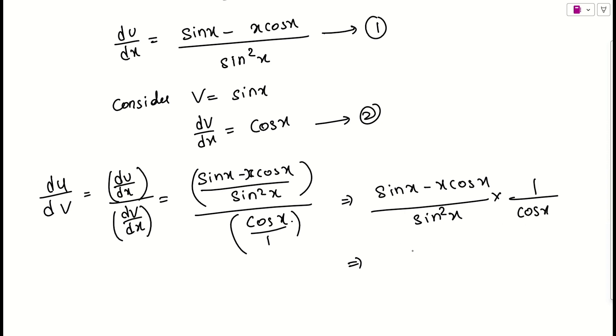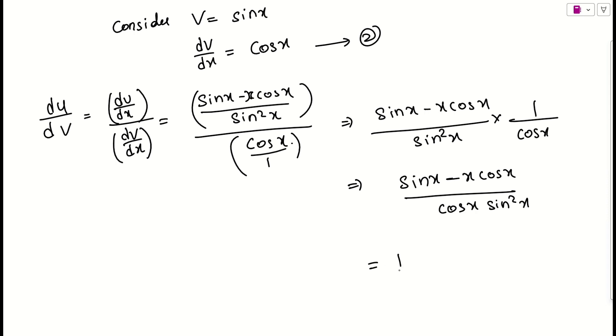So simply what I can do? I can actually rewrite it as sin x minus x cos x. I will multiply it by cos x into sin square of x. So I can actually simply take 1 by sin square as a common. So this will be sin x minus x cos x by cos x as it is.